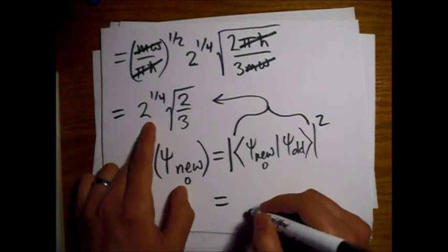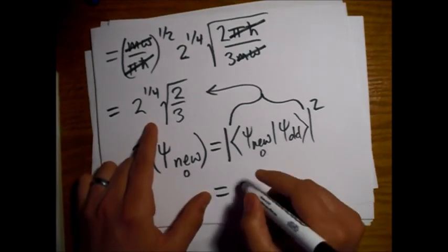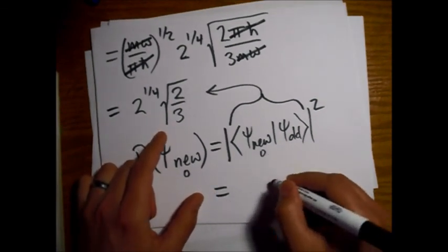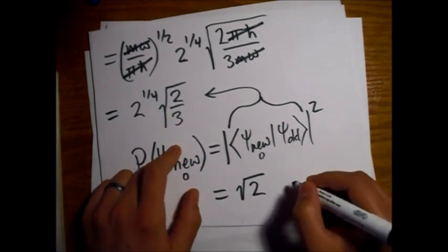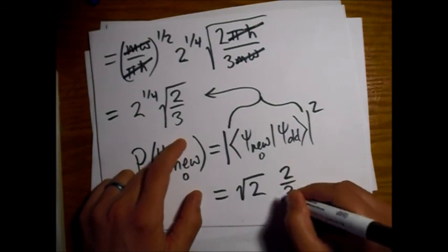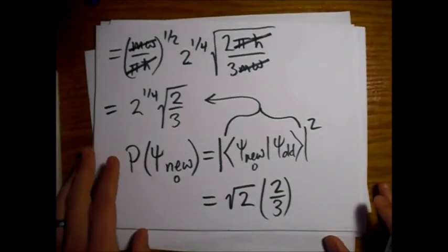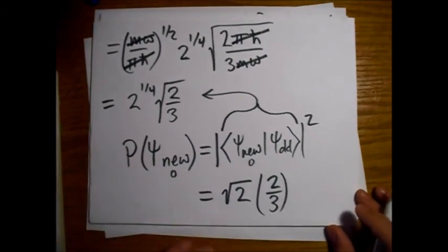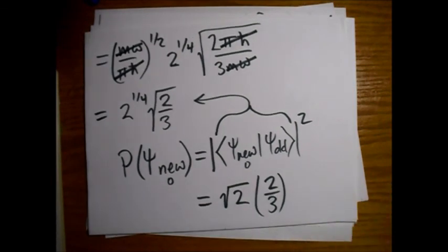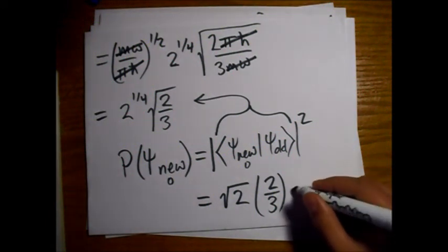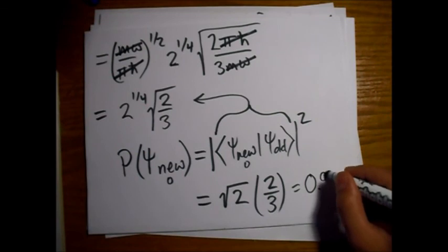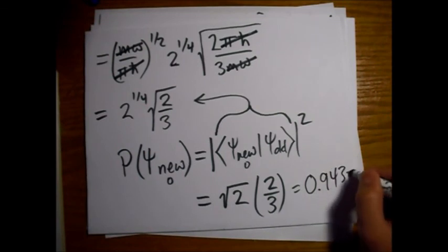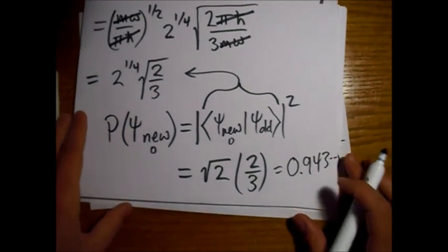So 2 to the 1/4 power squared is just the square root of 2. And then square root of 2/3 squared is just 2/3. And this is our answer. So when we plug this into the calculator, we get this thing that Griffiths tells us we would get, 0.943. Great. So there we go.